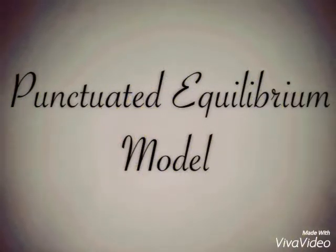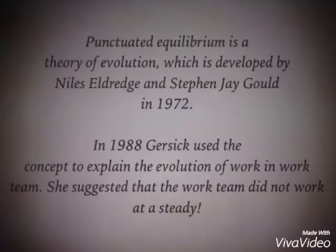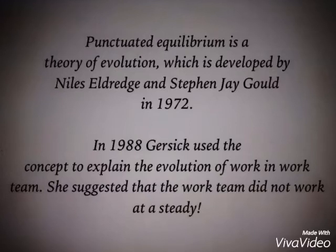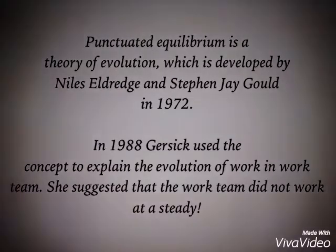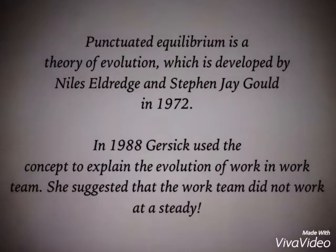Punctuated equilibrium is a theory of evolution developed by Neil Eldredge and Stephen Jay Gould in 1972. In 1988, Gersick used the concept to explain the evolution of work in work teams. She suggests that the work team did not work at a steady pace.